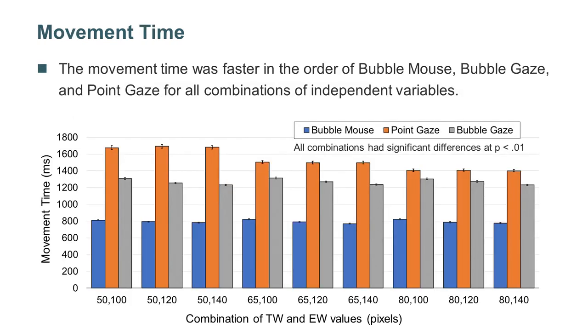The result of study one showed the bubble gaze cursor was significantly faster than the standard point cursor-based eye gaze interface.